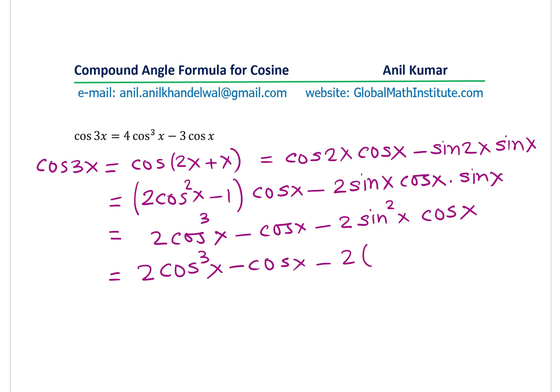We get 2 cos³ x minus cos x. Writing sin² x as 1 minus cos² x, we get all the terms in cosine. And that could be written as 2 cos³ x minus cos x. Now, open the brackets. We get 2 cos x minus 2(1 - cos² x) cos x, and minus becomes plus 2 cos³ x. Combining the like terms, we get our result, which is 4 cos³ x minus 3 cos x.